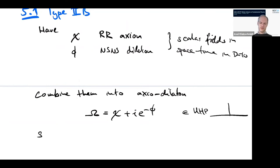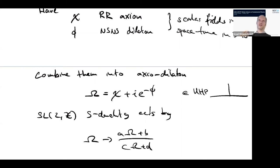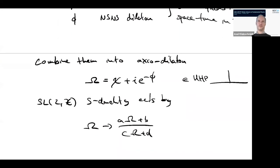The SL(2) symmetry acts on omega by the usual Möbius transformation: omega maps to (A omega + B)/(C omega + D). I'm using the letter omega here to underline that this looks a lot like things we've seen for one-loop scattering amplitudes but is a different object — it's the spacetime axio-dilaton, not the torus modulus.